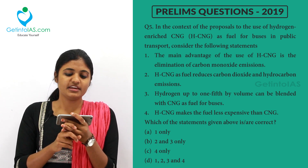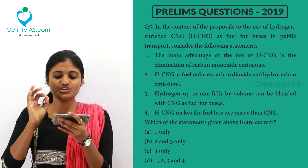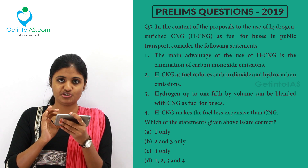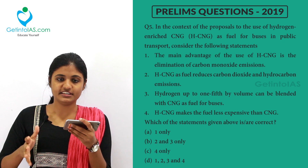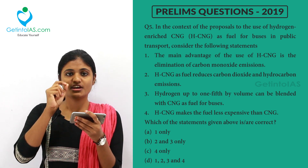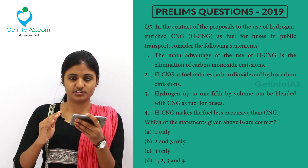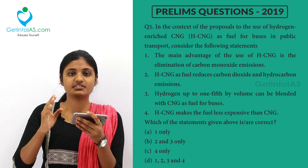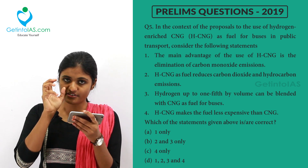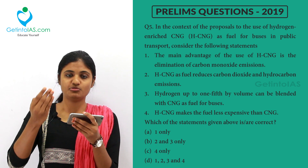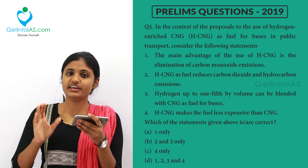The first option states the main advantage of using HCNG is the elimination of carbon monoxide emissions. Normally from a fuel, carbon dioxide and carbon monoxide are released. But does HCNG eliminate or just reduce carbon monoxide? The first option is wrong — it does not eliminate. It only reduces carbon monoxide emissions by 70 to 75 percent.